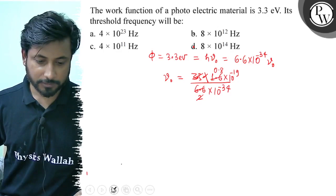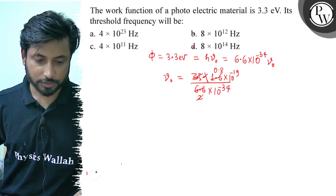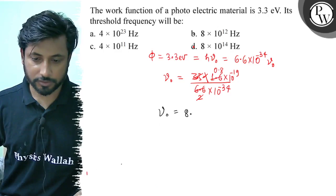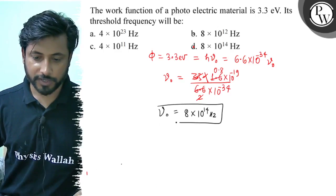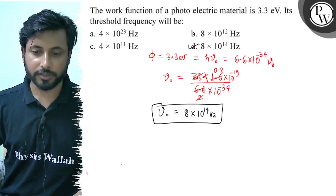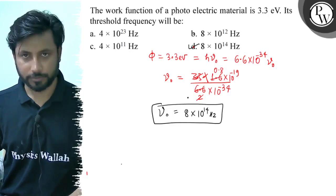So here comes the threshold frequency. Threshold frequency equals 8 × 10^14 Hz. So final answer is option D, 8 × 10^14. Best of luck.